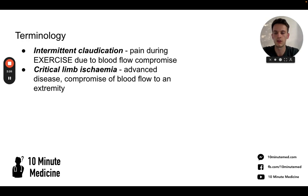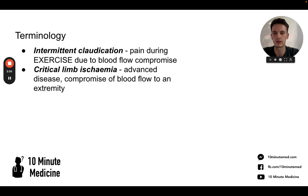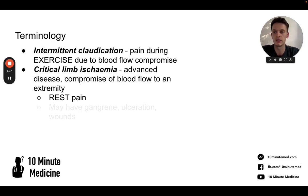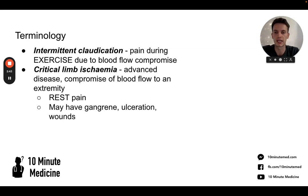Another key term is critical limb ischemia. This is where there's advanced peripheral arterial disease and blood flow is actually compromised to the extremity. This causes rest pain, and you may also have other features like gangrene, ulceration, and wounds.